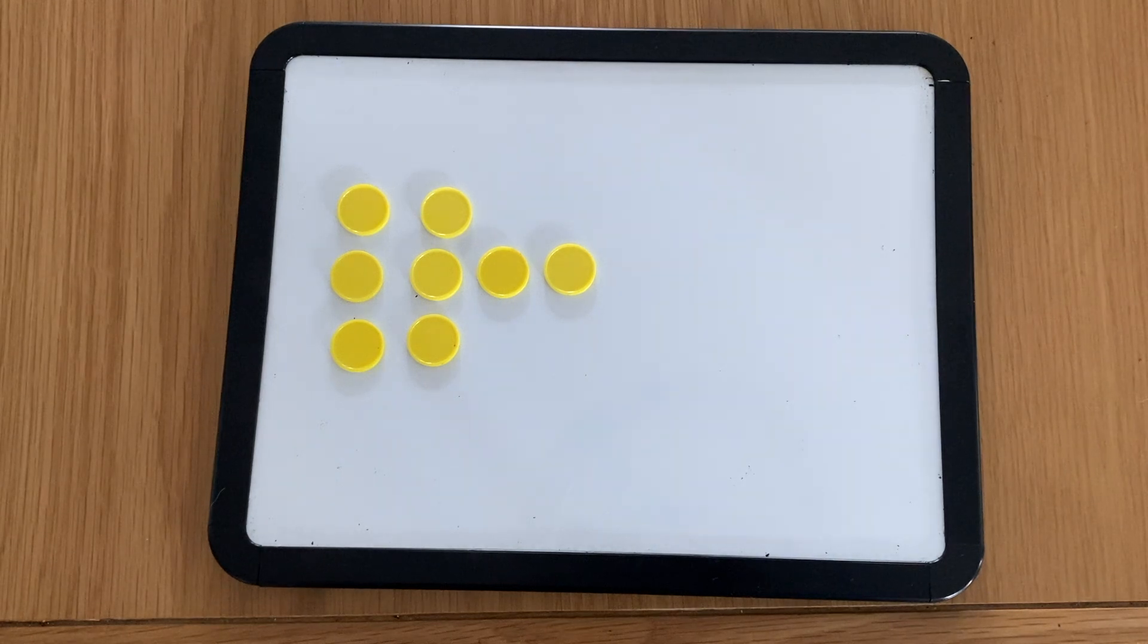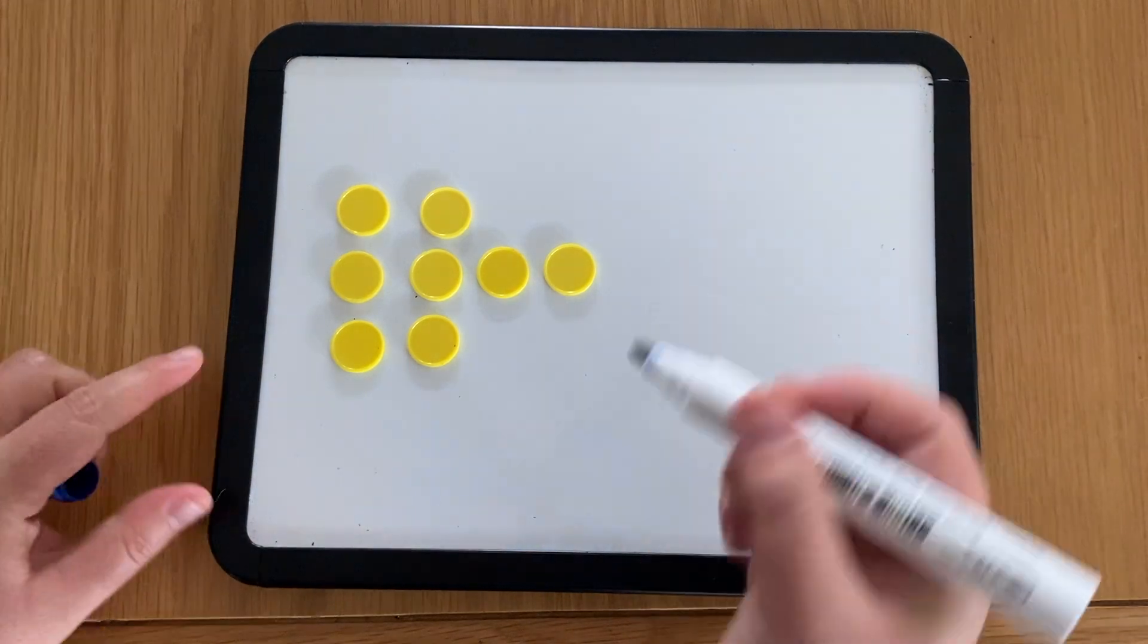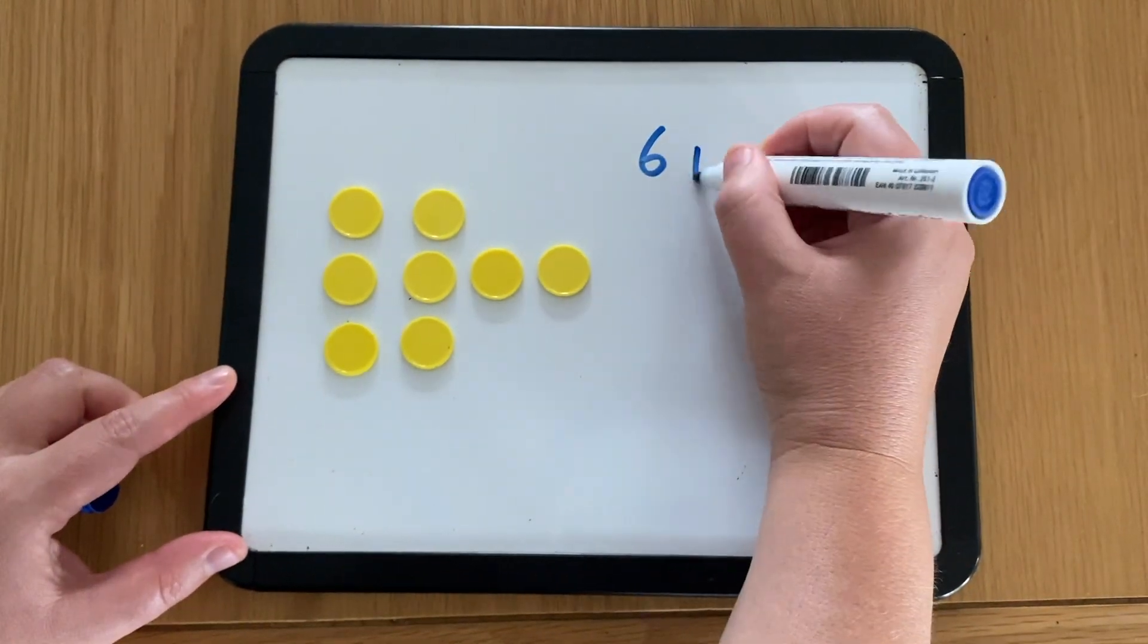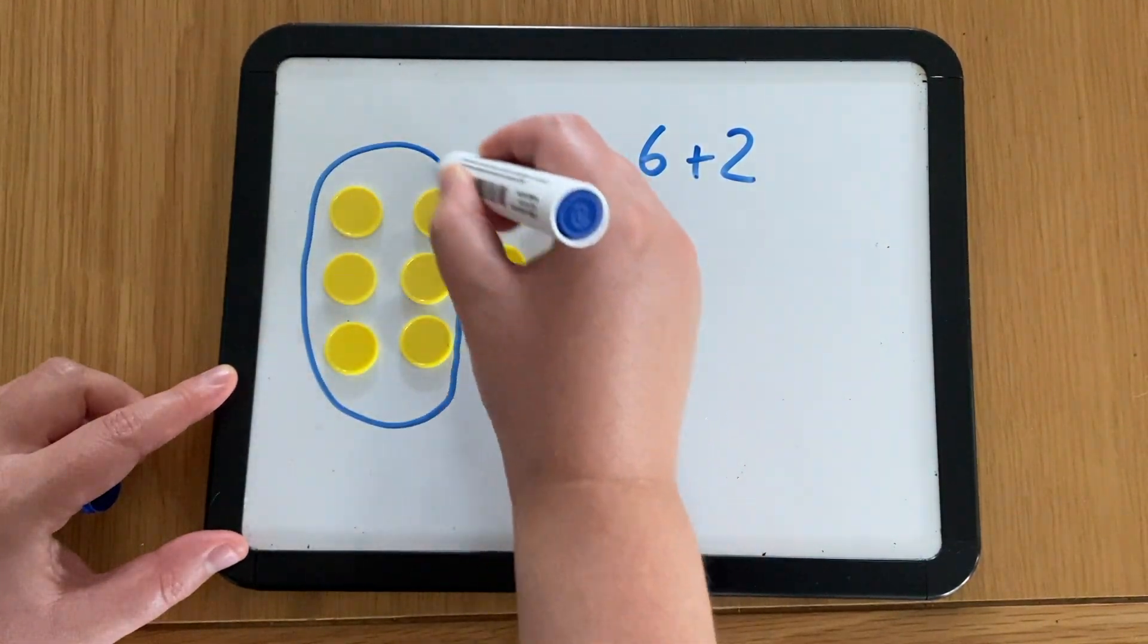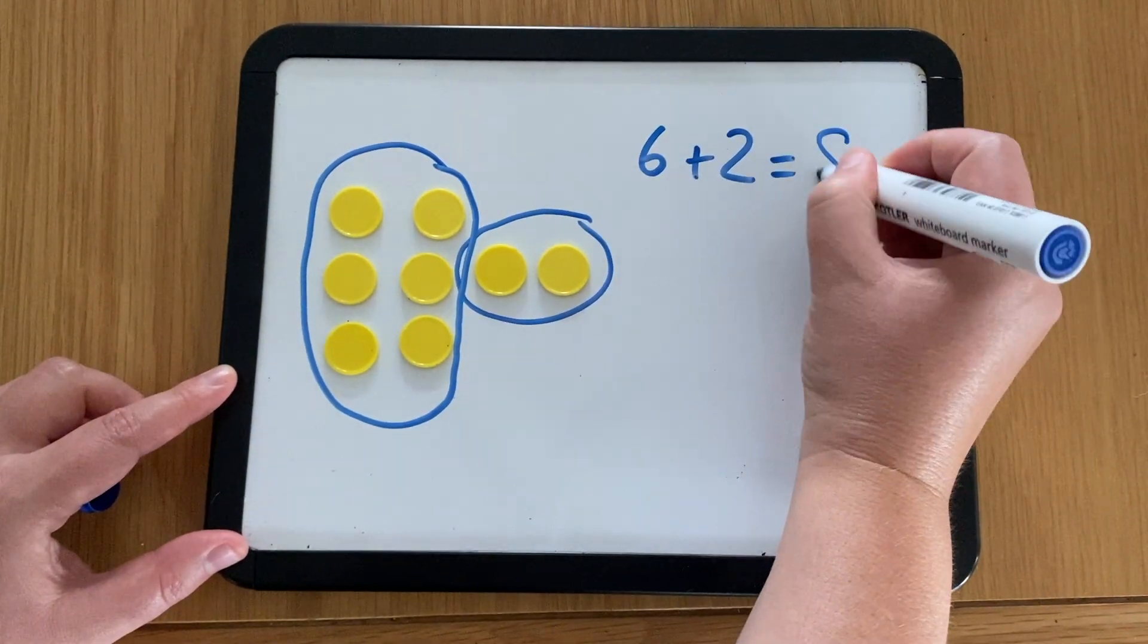Then we would come back together as a class and I would maybe ask around two to three students how they saw this collection. So I would record if a student said that they saw six and then they saw another two, I might circle it to show the different chunks that they saw and then record the number sentence together.